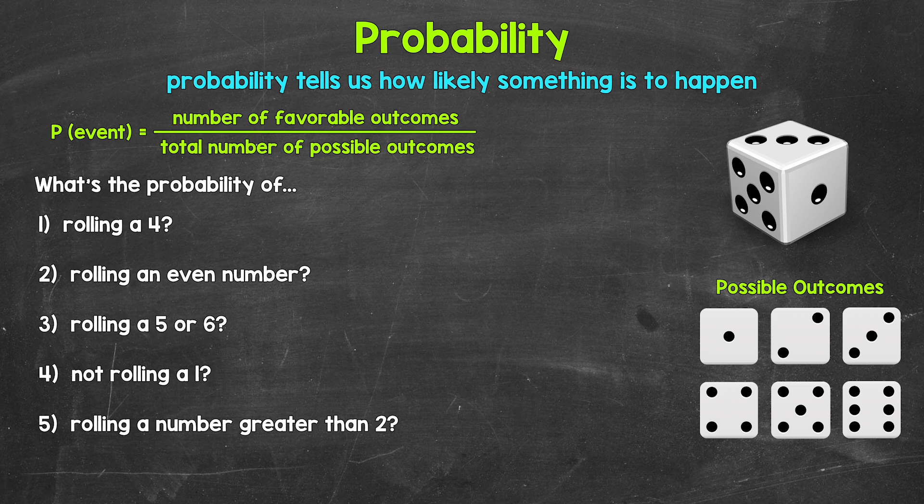Let's jump into our examples here, where we are going to say that we are rolling a fair, six-sided die. A fair die just means we have an equal chance of rolling any of the sides. We have five events here that we're going to find the probability of. For number one, what's the probability of rolling a four?